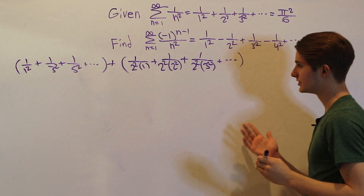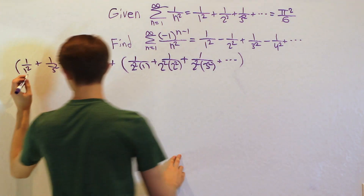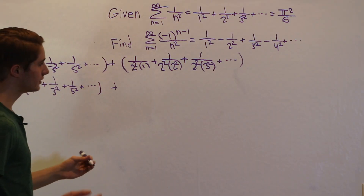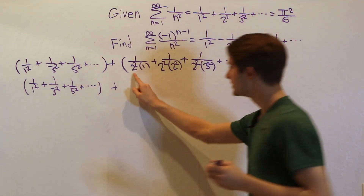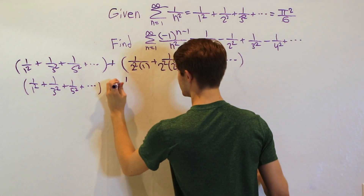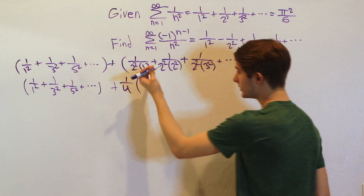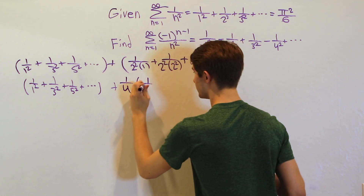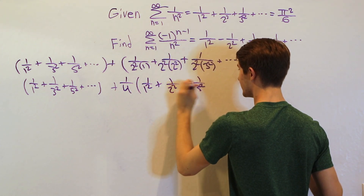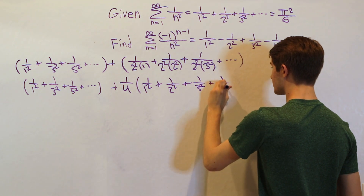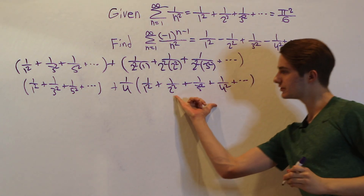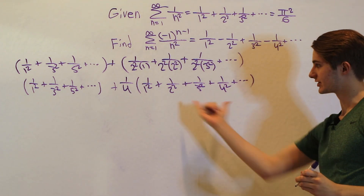We can factor out 1 over 2 squared — which is 1 over 4 — from each of the even terms. What's left is 1 over 1 squared plus 1 over 2 squared plus 1 over 3 squared plus 1 over 4 squared, and so on. And we know this — it's just pi squared over 6.